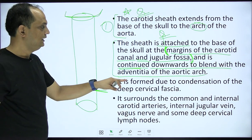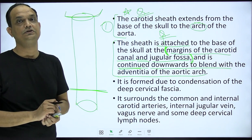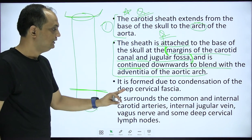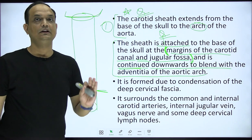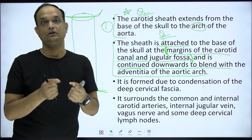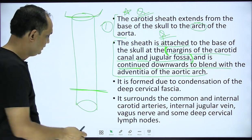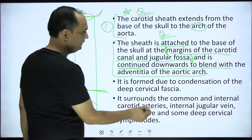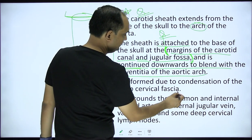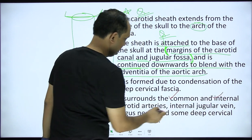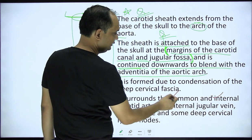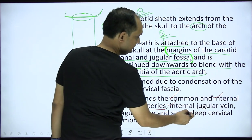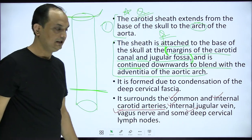The carotid sheath is formed due to the condensation of the deep cervical fascia of the neck. Inside the carotid sheath you have the common and internal carotid artery, internal jugular vein, vagus nerve, and the deep cervical lymph nodes.